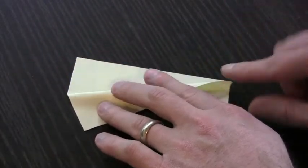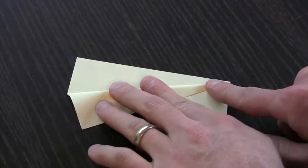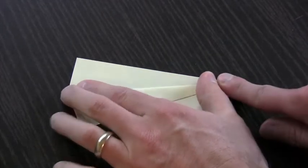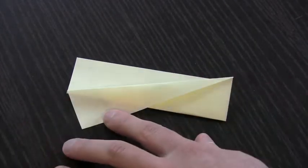Now this next fold is a little strange. We're going to go from the middle to the outer corner, just from middle to corner, and get another nice clean crease there.